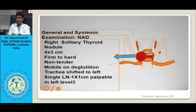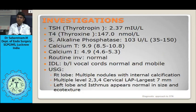The right solitary thyroid nodule was firm to hard, non-tender, moving with deglutition, and the trachea was shifted to the opposite side. There was a single palpable node. If you get a patient like that, how should we proceed, what tests should we do, and how to evaluate — this is what we are going to deal with today.